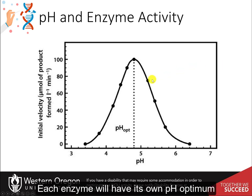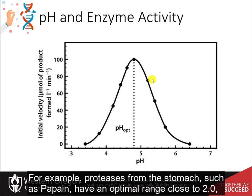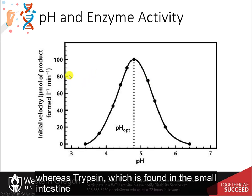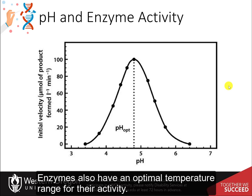Each enzyme will have its own pH optimum that must be established through experimentation. For example, proteases from the stomach, such as papain, have an optimal range close to pH 2, whereas trypsin, which is found in the small intestine, prefers a pH closer to 8 and would be denatured in the stomach environment.